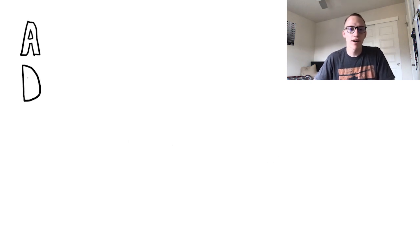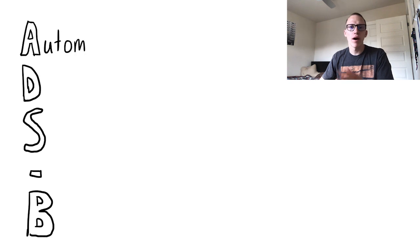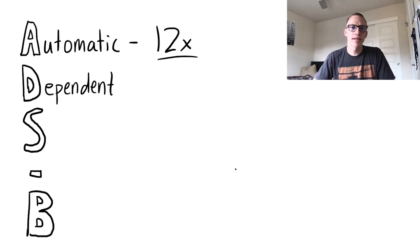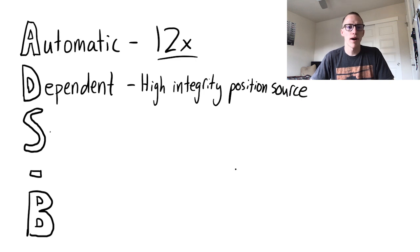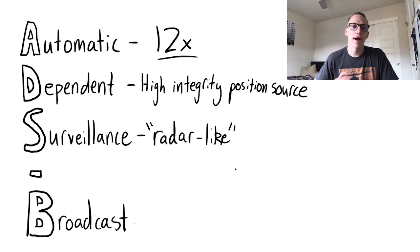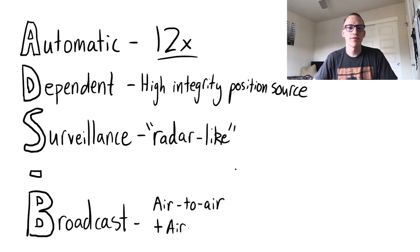To understand ADS-B, we can break down the acronym. First, A stands for automatic. Aircraft with ADS-B out will automatically transmit their position 12 times more often than radar usually detects. D stands for dependent. Aircraft using ADS-B out require a high integrity position source, which could be WAAS GPS. S stands for surveillance. ADS-B provides radar-like surveillance for ATC to have aircraft position. B stands for broadcast. The aircraft broadcasts its position, info, and a unique ID. The position info includes latitude, longitude, altitude, velocity, and more. The broadcast travels from both air-to-air and air-to-ground.